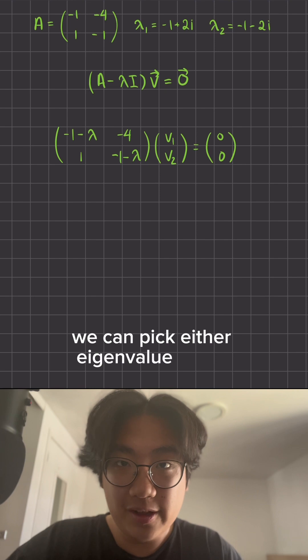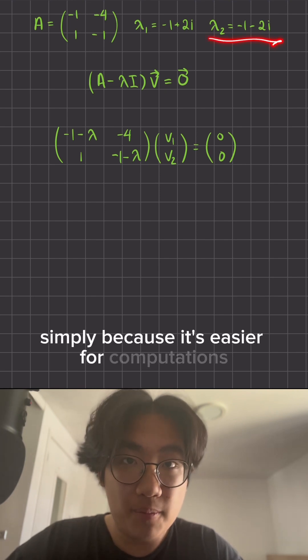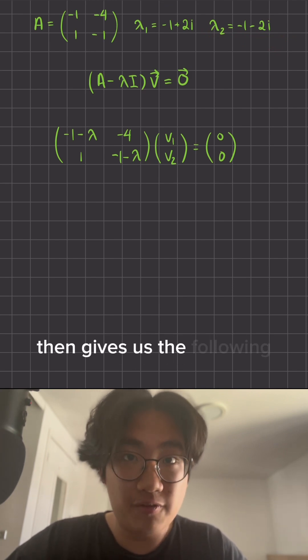From this step, we can pick either eigenvalue to use. I'm simply going to pick lambda 2 because it's easier for computations. Plugging that into our equation then gives us the following.